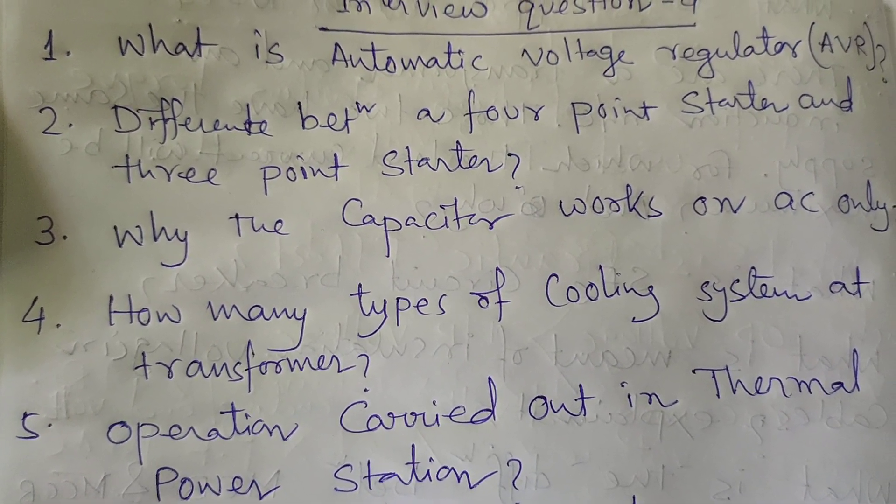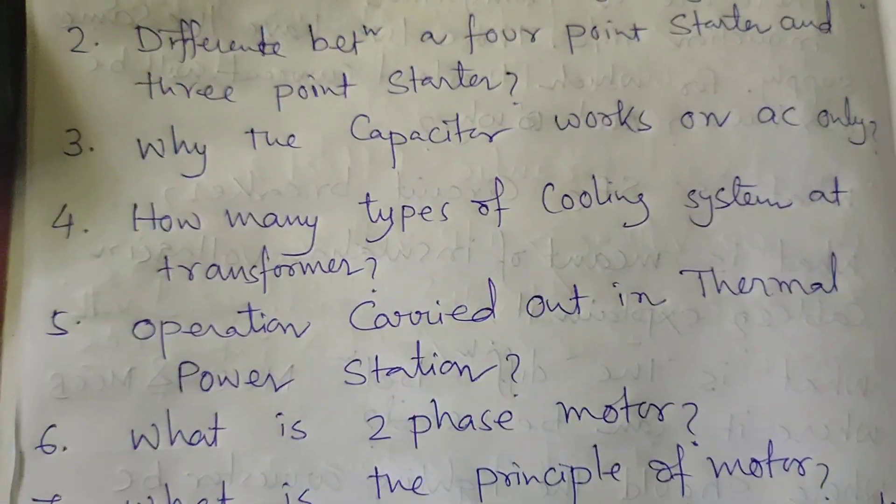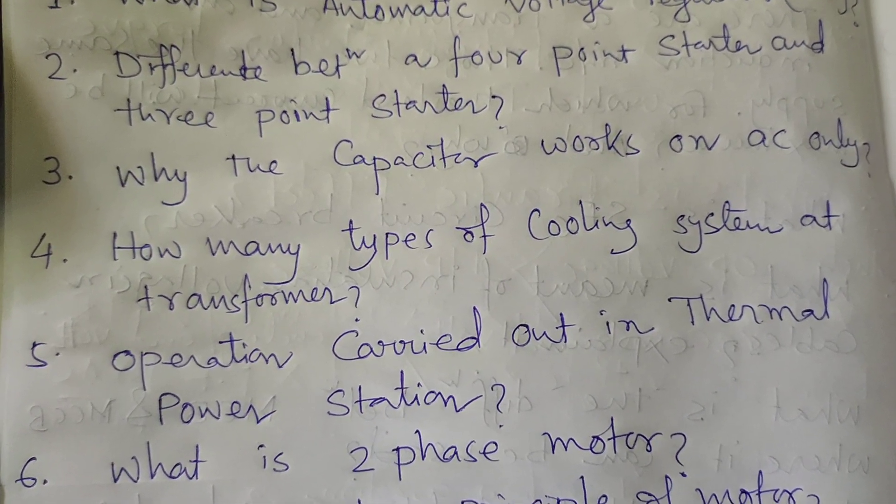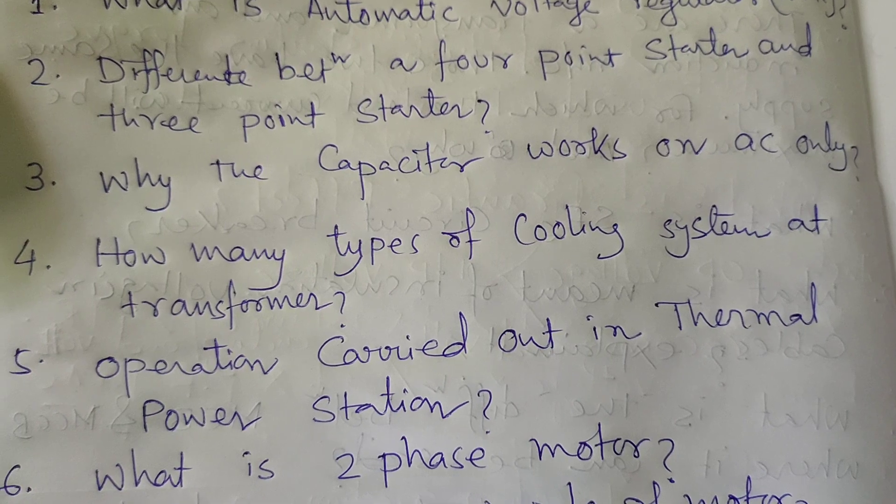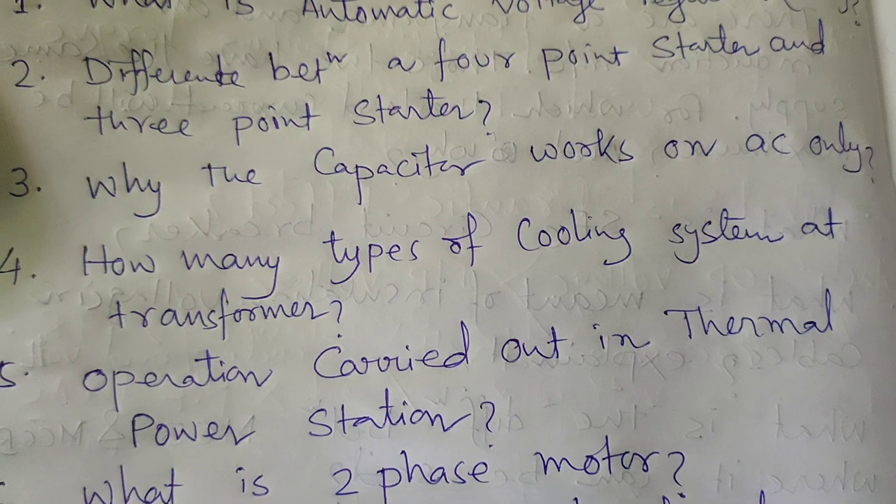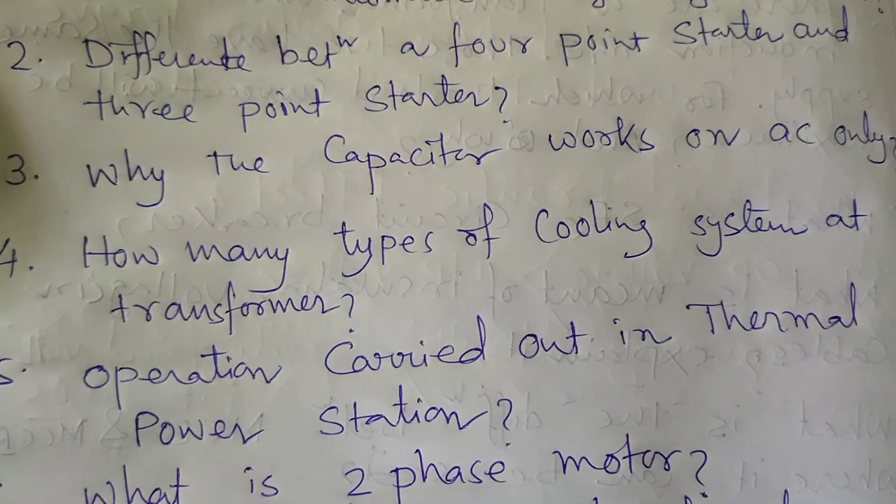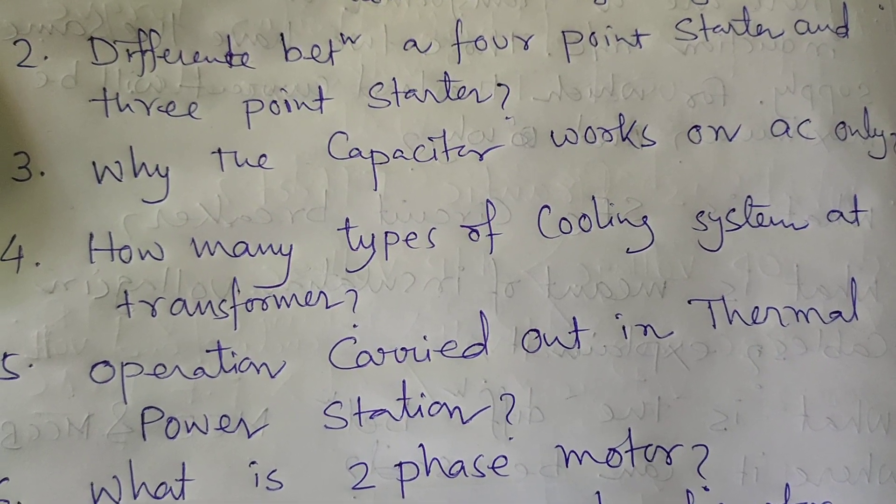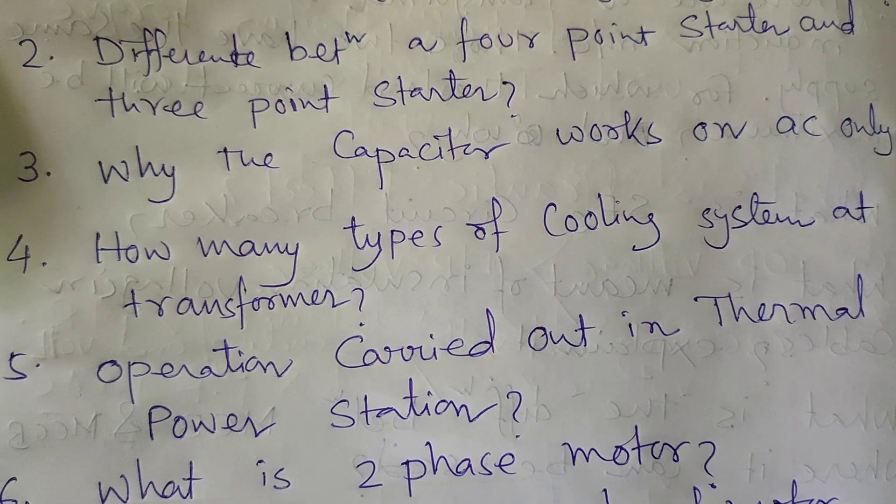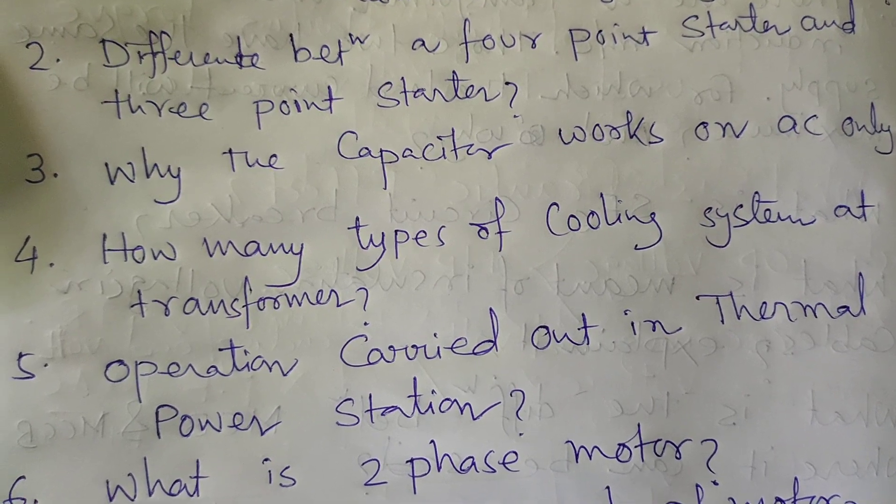Fifth question: Operations carried out in thermal power station. Water is obtained in the boiler and coal is burned so that steam is obtained. This steam is allowed to hit the turbine, which is coupled with a generator to generate electricity. This is the total procedure carried out at the thermal power station.